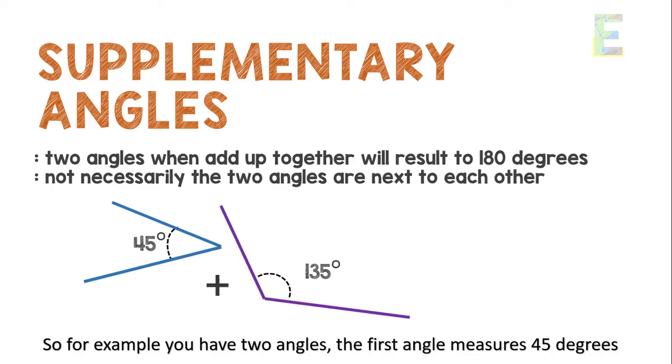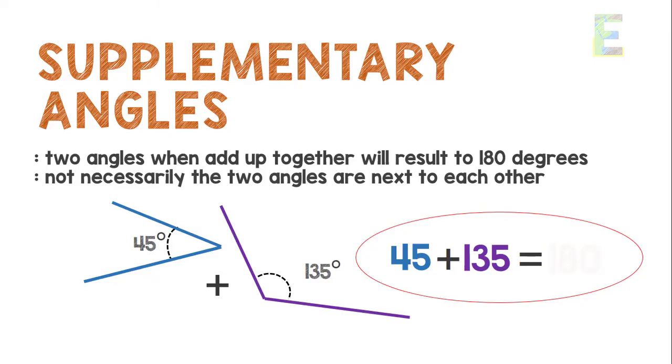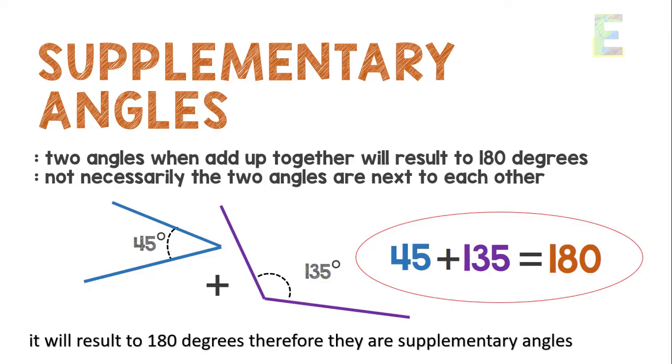So for example, you have two angles. The first angle measures 45 degrees and the other angle measures 135 degrees. So if we add 45 and 135, it will result in 180 degrees. Therefore, they are supplementary angles.